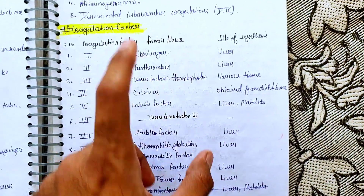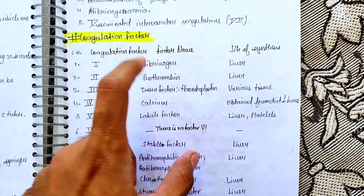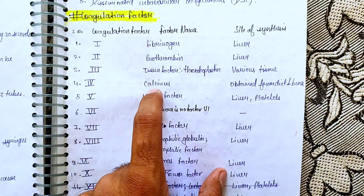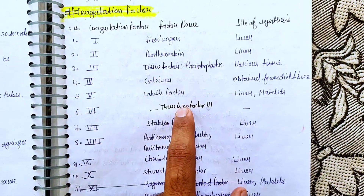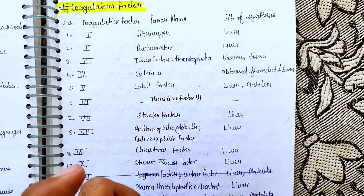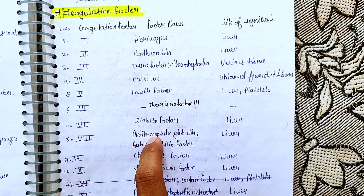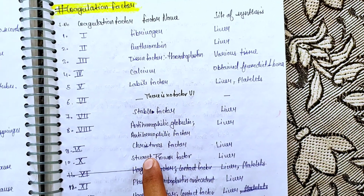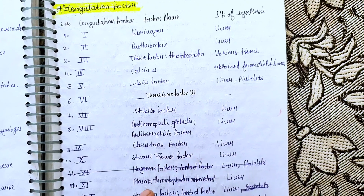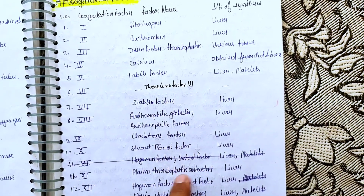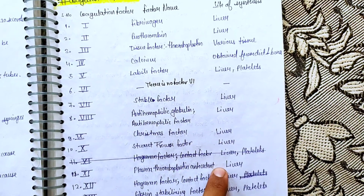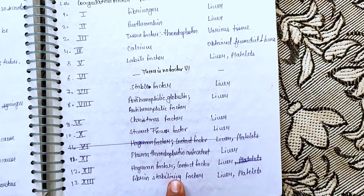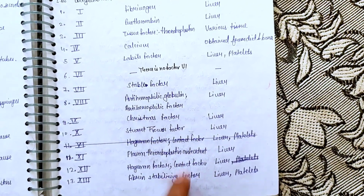These are all the coagulation factors: Fibrinogen, Prothrombin, Tissue Factor which is Thromboplastin, Calcium, Labile Factor, then the sixth, then Stable Factor, Antihemophilic Globulin, Antihemophilic Factor, Christmas Factor, Stuart-Prower Factor, Plasma Thromboplastin Antecedent, Hageman Factor, Contact Factor, and the Fibrin Stabilizing Factor which is the thirteenth factor.